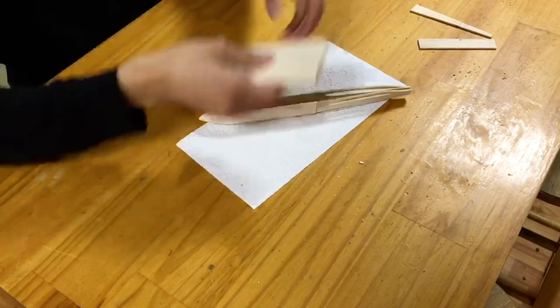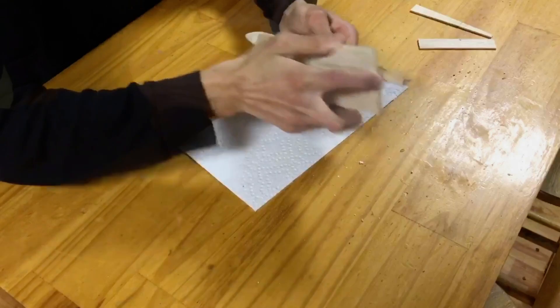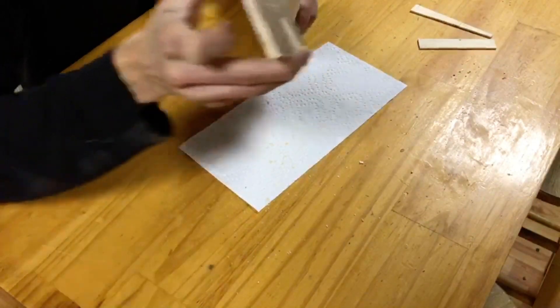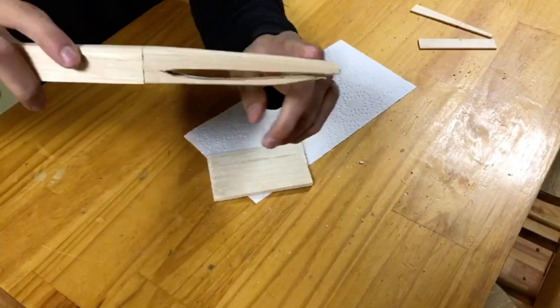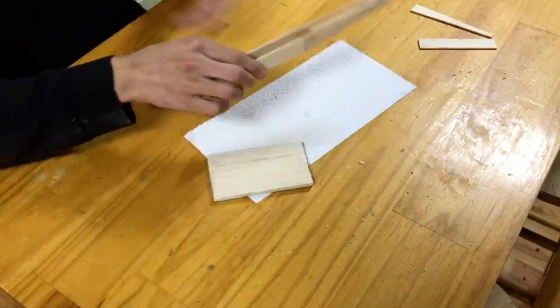Once I'm done gluing, I take the sanding block and simply round off the edges. Here's a bit of a close-up view just to give you an idea of how much I really am sanding these contours.